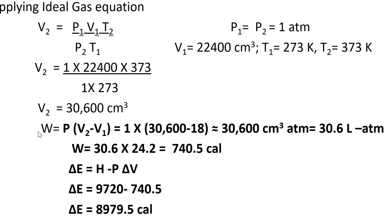We calculate work: W = P(V₂ - V₁) = 1 × (30,600 - 18) ≈ 30,600 cm³ atm = 30.6 L atm. Converting to calories by multiplying with 24.2, W = 740.5 cal. So ΔE = ΔH - PΔV = 9720 - 740.5.